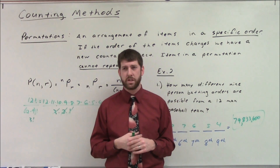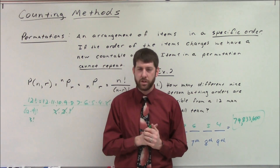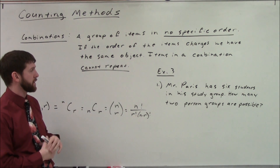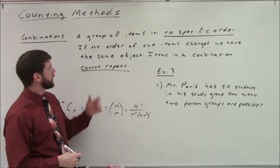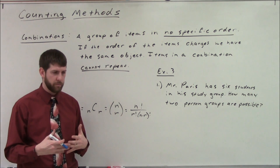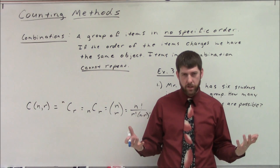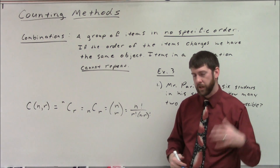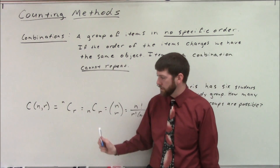Next are combinations, where items cannot repeat but order doesn't matter. If the order of the items changes, we still have the same object — think of it as groups. This is different from permutations: changing order within the subgroup gives you a new countable object for permutations, but not for combinations. Notation-wise, n and r mean the same thing — n is how many items to choose from, r is how big the subgroup is.